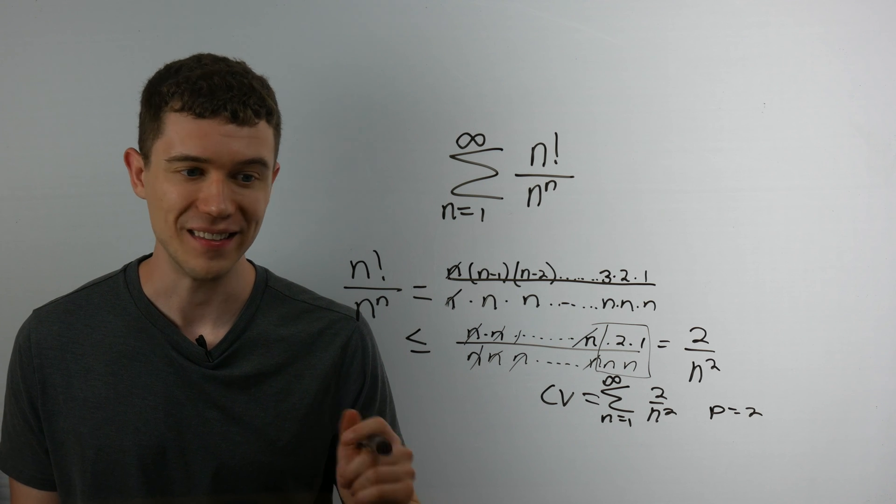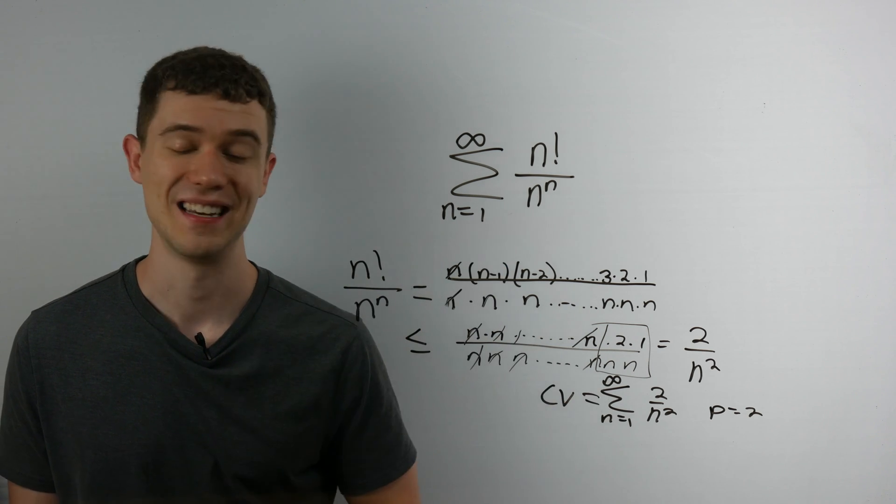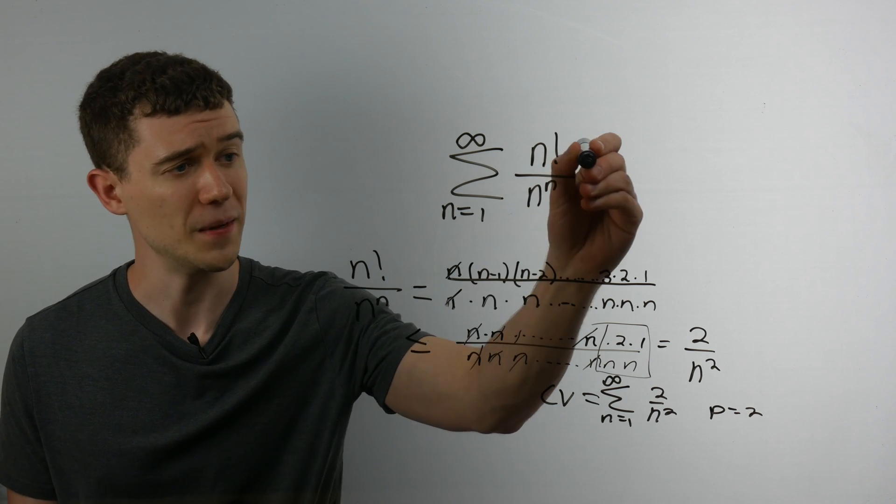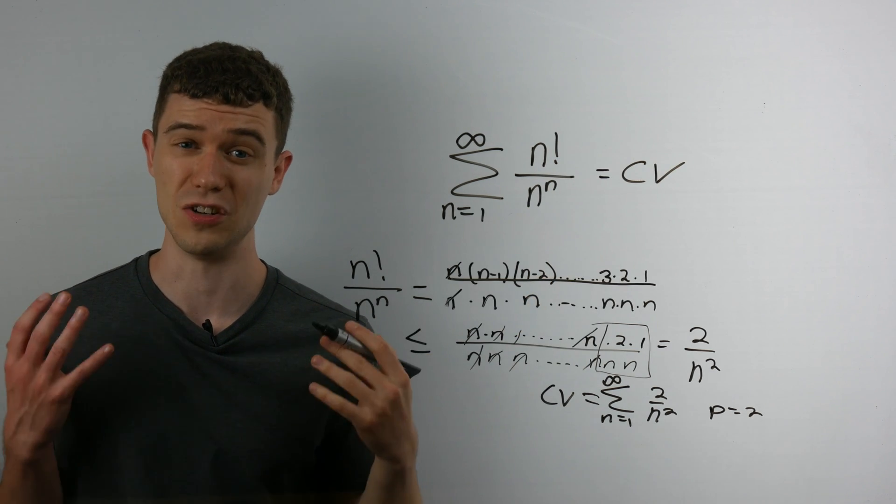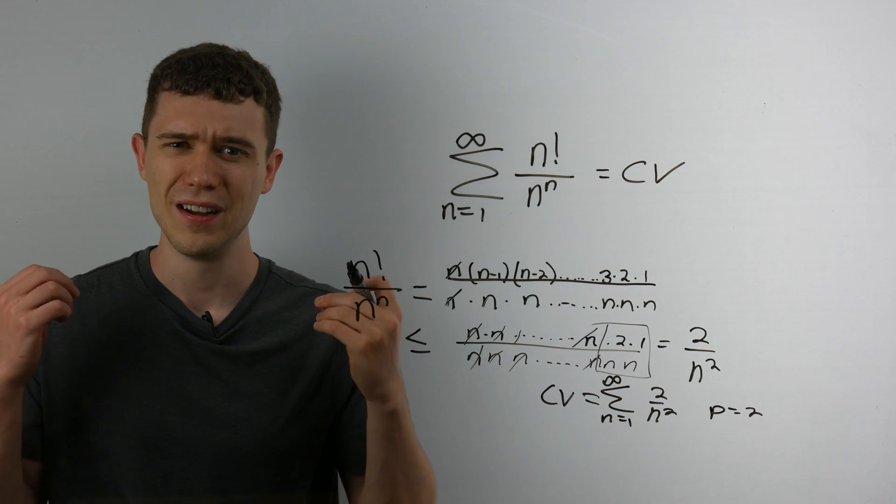And now what that means, we showed that our series in question is less than a convergent series. That means our series must converge by direct comparison. Okay. So that was a little tricky.